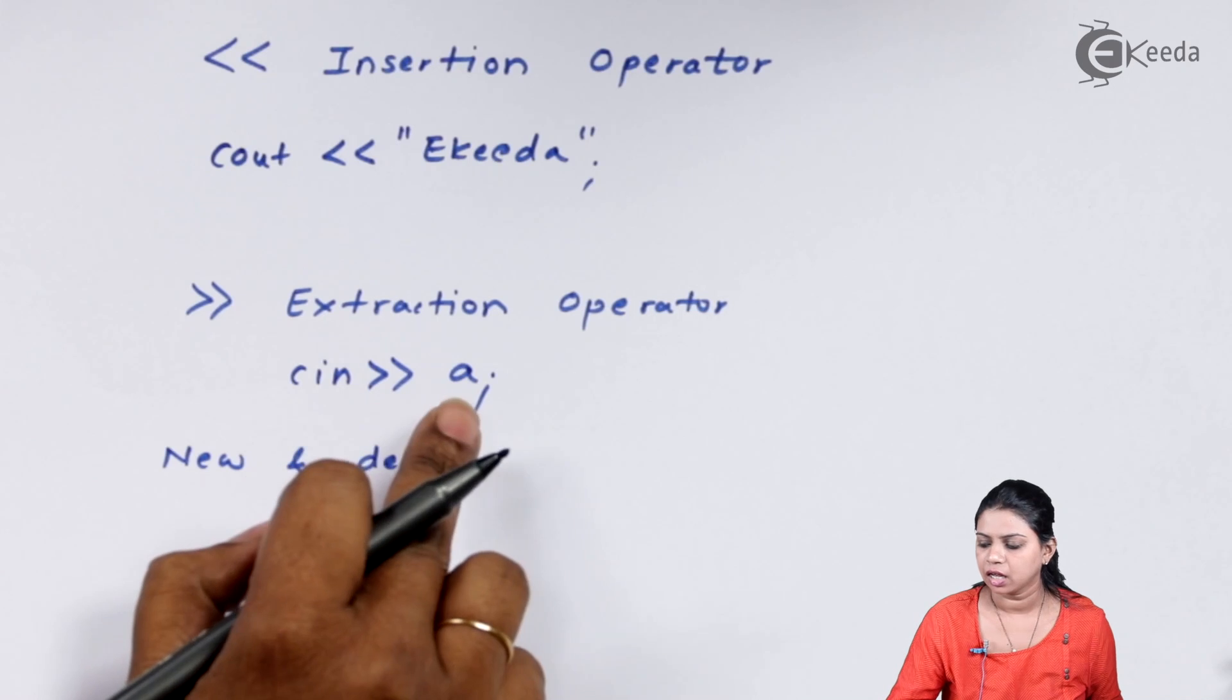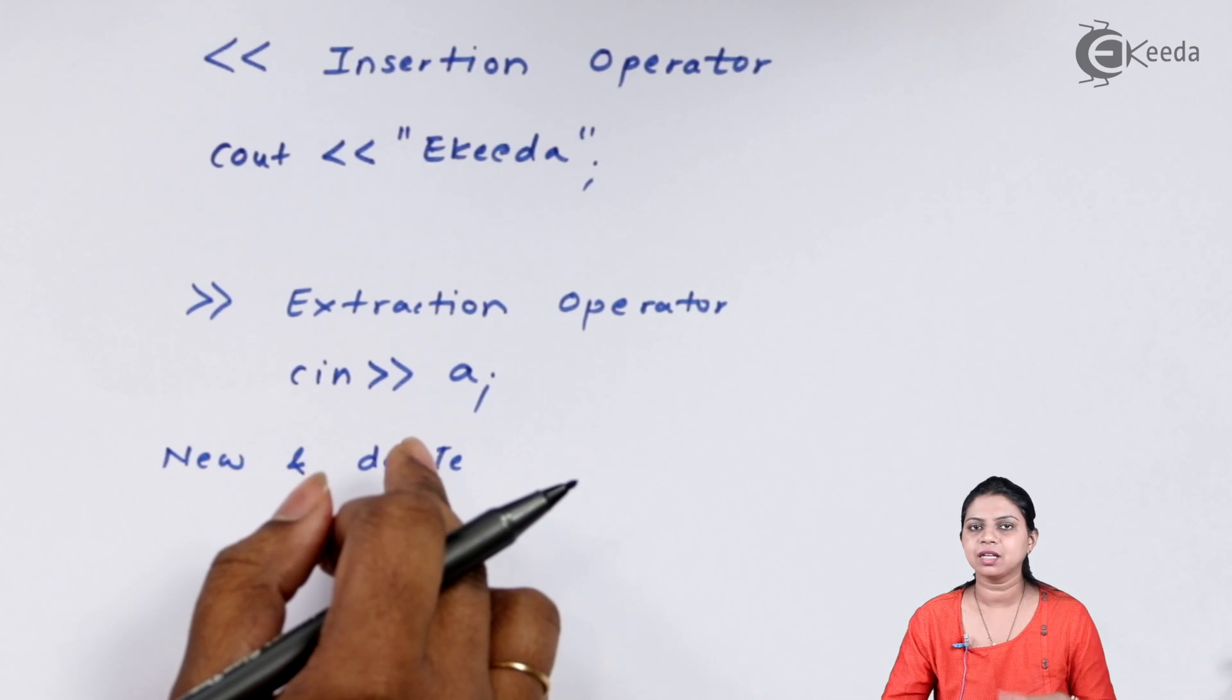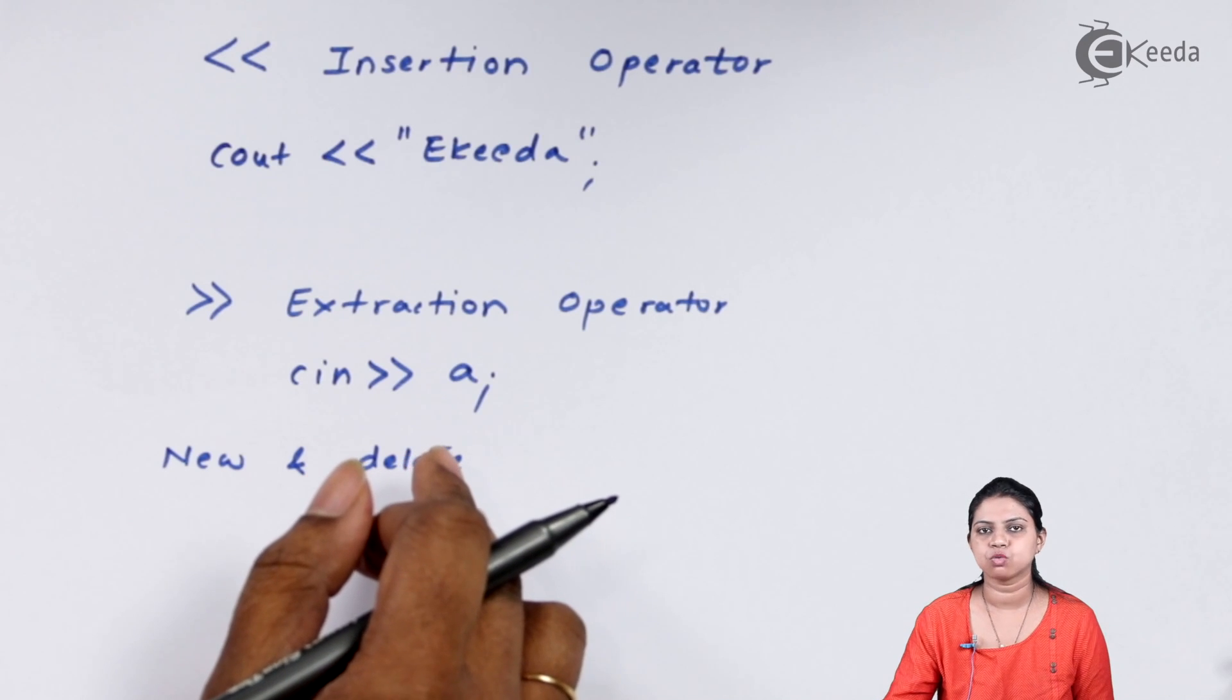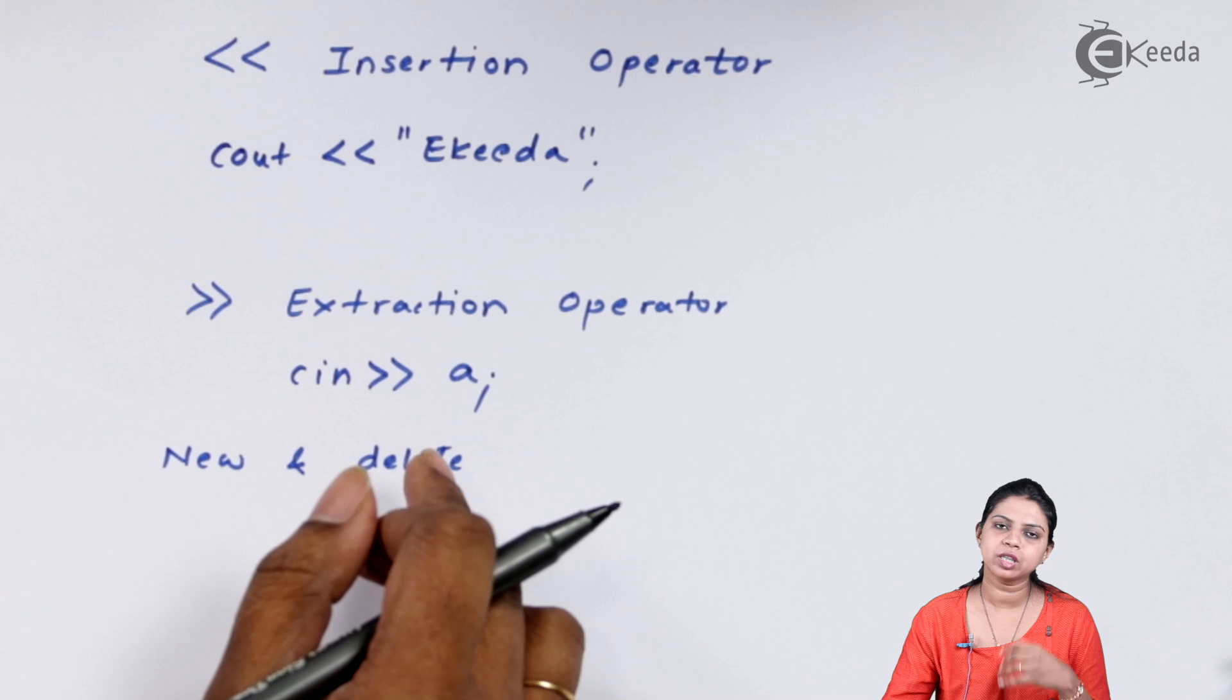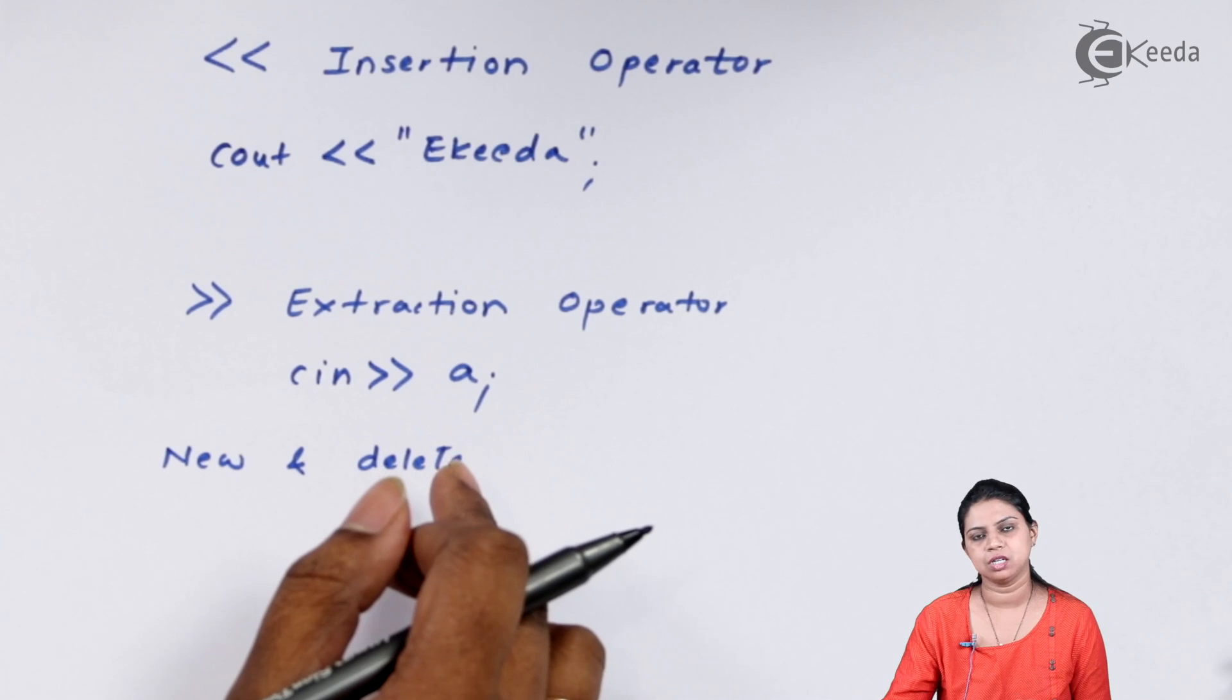When I write cin extraction operator A, it means I am extracting the value of A. What does extracting the value of A mean? The cin function is basically used to input the value of a variable. Whenever we need input, we use cin. Whenever we need output, we use cout.